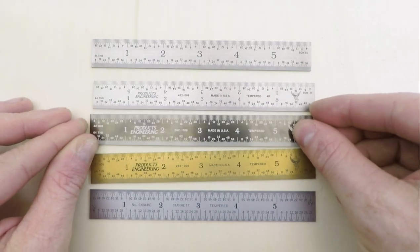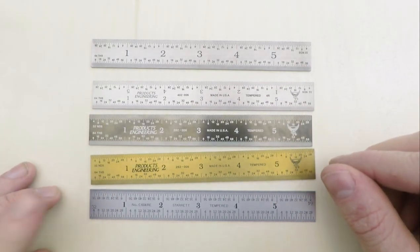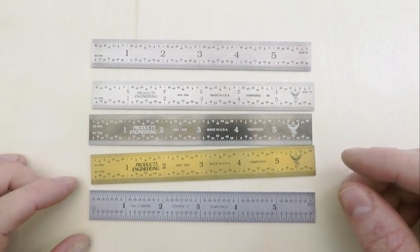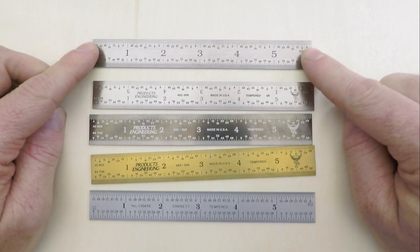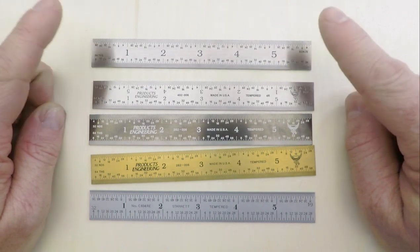So, bottom line, my recommendation first is to buy Starrett if you can afford it. If you can't justify spending twenty-seven dollars on a six inch ruler, I say skip the PEC products and take the cheap import model.